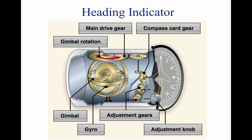Some heading indicators, referred to as horizontal situation indicators (HSI), receive a magnetic north reference from a magnetic slaving transmitter, and generally need no adjustment. The magnetic slaving transmitter is called a magnetometer.